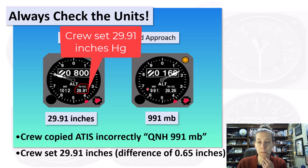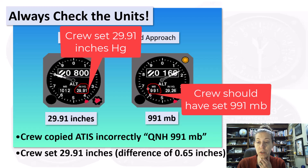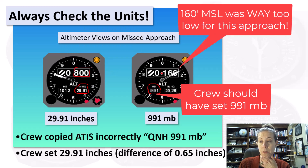So let's take a look at what happened at the missed approach. If their altimeter showed 800 feet with the altimeter setting at 29.91 inches of mercury, that's what they would have seen. However, if they had correctly set it — this was indeed quite low pressure, poor weather — if they had set 991 millibars instead, at the missed approach they would have only seen 160 feet.